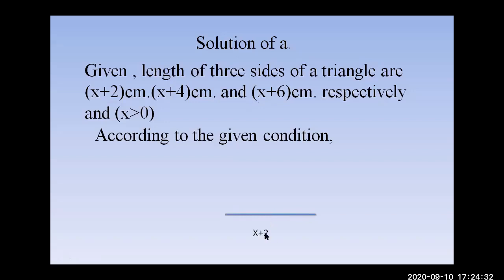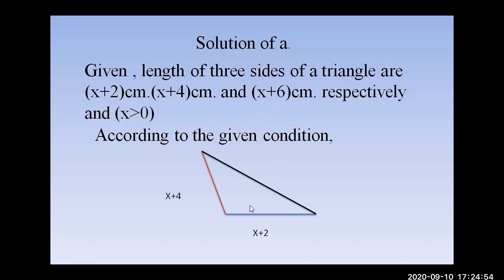If x = 2, then x + 2 = 4 cm, x + 4 = 6 cm, and x + 6 = 8 cm. Draw the triangle with sides 4 cm, 6 cm, and 8 cm using a compass. The value of x must be more than zero.